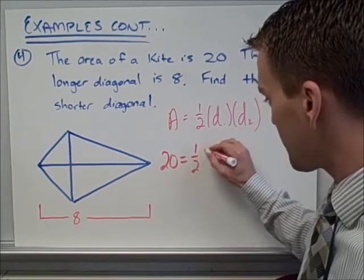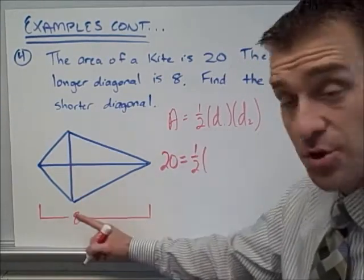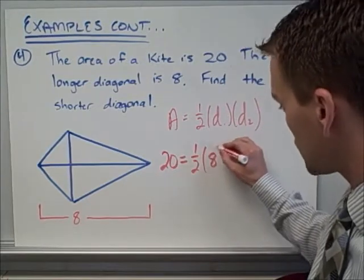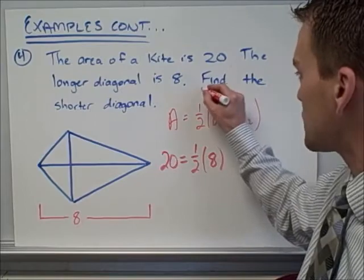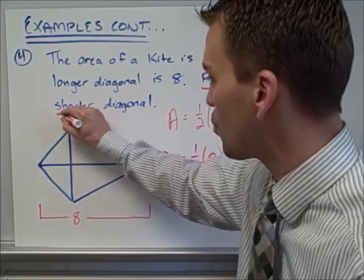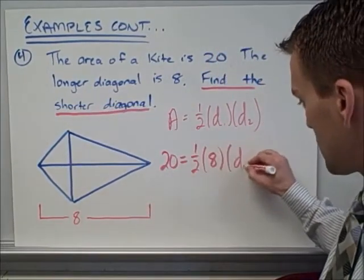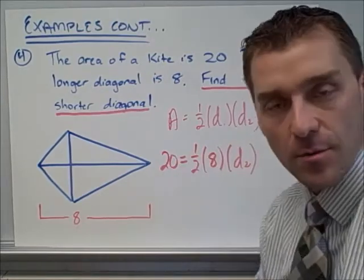One-half stays one-half. Do I know the length of one diagonal? I sure do - the length of one diagonal is given to me to be eight. Sweet. Do I know the length of the other diagonal? No, I don't. That's what it's asking me to find, the length of the shorter diagonal. So this is going to be my variable that I'm looking for.